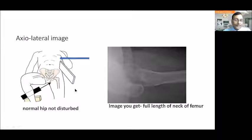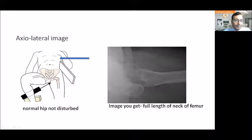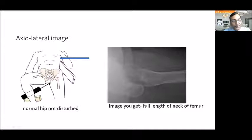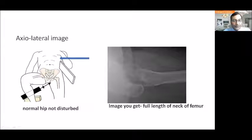With the axial lateral image, the fractured or pathological hip remains in its normal position undisturbed. The normal hip is bent and flexed, and behind it the X-ray tube is positioned so the image crosses to give a lateral view. This way we get the full view of the neck in the lateral image.